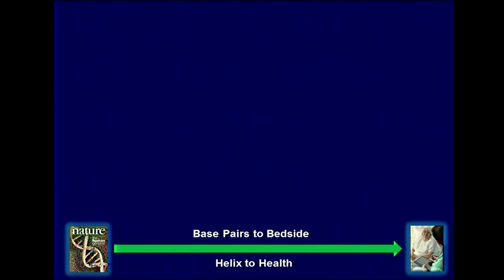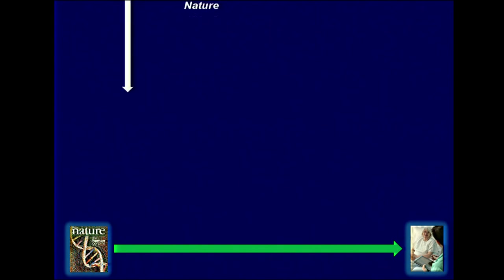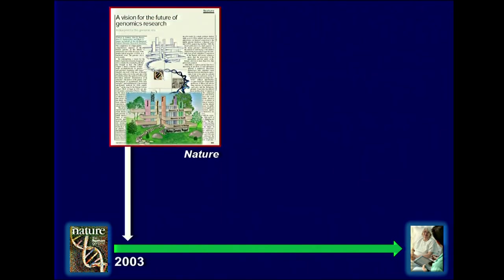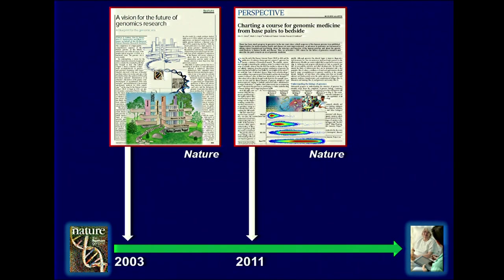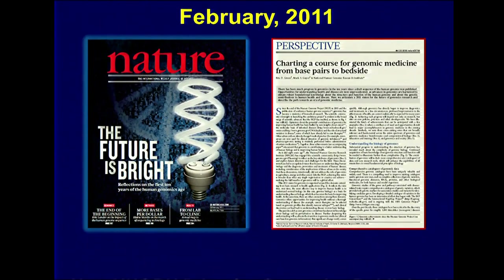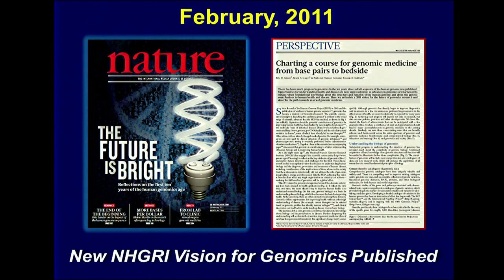Thinking about this journey from the base pairs of the Genome Project to the bedside of patients — or 'from helix to health' — literally the day the Genome Project ended, NHGRI published a strategic vision articulating the next phase for genomics research. It was a very good plan, but because of accomplishments, it wasn't going to last even a decade. By 2011, we underwent another major strategic planning process, engaging the field very broadly including hundreds of international scientists, and articulated a new strategic vision that now describes the next phase for human genomics research with a major emphasis on applying genomics to clinical medicine — even using the phrase 'genomic medicine' in the title.